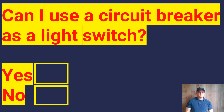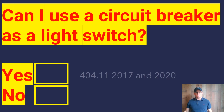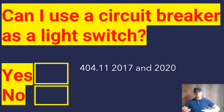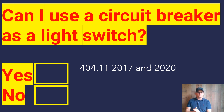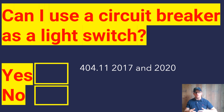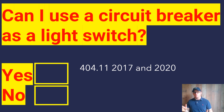All right, guys, so the question that we're looking at today is: can I use a circuit breaker as a light switch? And the short answer is yes, you can. We're going to find this in 404.11 in the 2017 and in the 2020. You can use a circuit breaker as a light switch as long as it has the required number of poles on that circuit breaker, but you're also going to have to watch out for readily accessible location and all of the other things that go along with overcurrent devices and as well with switches.